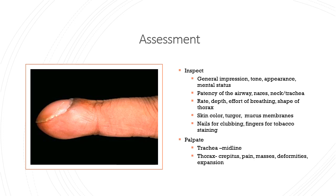As you enter the room or first interact with the patient, look at their overall general impression — muscle tone, posture, appearance, and mental status. Look at the patency of the airway and the nares. Look at their neck and trachea — is it midline and symmetrical? Observe the rate, depth, and effort of breathing. The shape of the thorax. Look at the skin color, check the turgor and mucous membranes. Look at the nails for clubbing, or the fingers for tobacco staining.